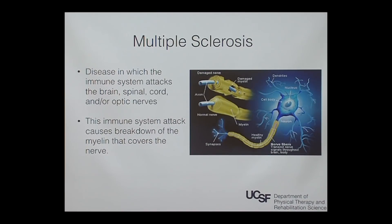This is a general overview of what this disease is. Multiple sclerosis is a disease in which the immune system attacks the brain, the spinal cord, and/or optic nerves. The immune system attack can cause breakdown in the myelin — that yellow portion. Typically, the body will either regenerate some of this myelin, and whatever parts are not regenerated, the body will lay down scar tissue in lieu of where the myelin was.